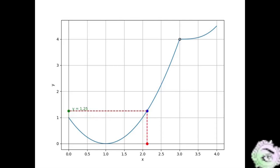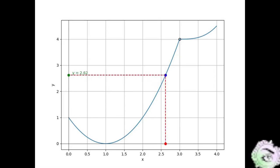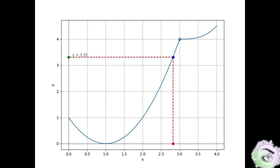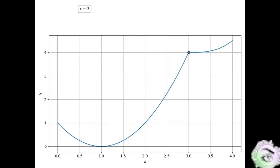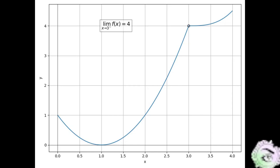Let's observe the movement of the y-coordinate as x moves toward 3 from the left. We can see that as x moves towards 3 from the left, y moves towards 4. Therefore, we conclude that the left limit of f at 3 is 4. We denote it in symbols as: lim as x approaches 3 from the left of f of x equals 4.